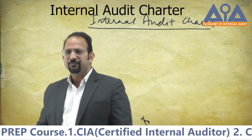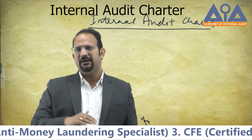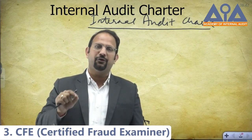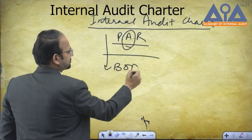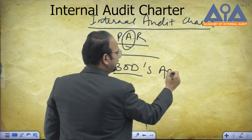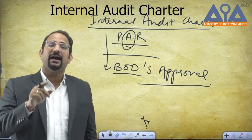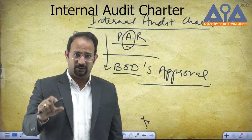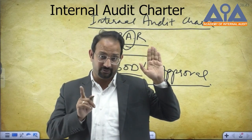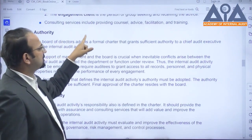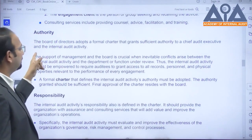This document — the internal audit charter — is prepared by the audit department and reviewed by the chief audit executive, or head of the internal audit department. We ask the board of directors to approve this charter, so that whenever we are doing an activity, if we find any problem, we can refer to the charter as our authority and management cannot restrict us. The board of directors adopts a formal charter that grants sufficient authority to the audit executive and the internal audit activity.